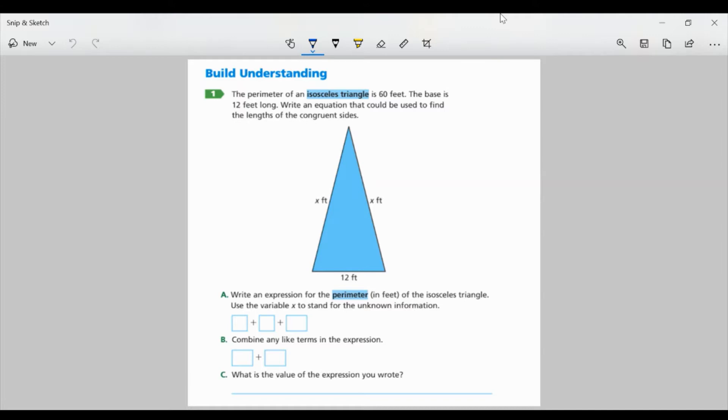So for perimeter of a triangle, I'm going to add all three sides, right? So I need to add X, X, and 12. So for part A, I'm just going to plug those into these boxes. I have X plus X plus 12.